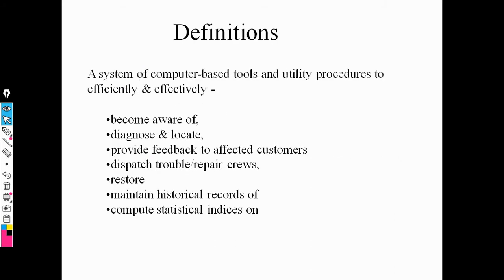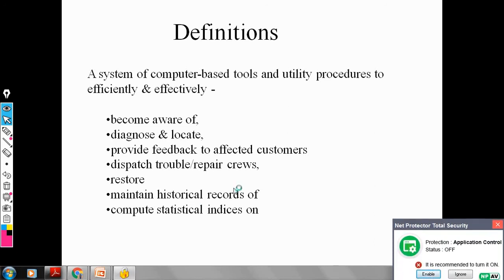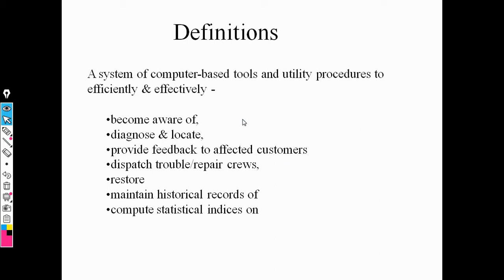What is the meaning of outage management system? An outage management system is a computer-based tool that works efficiently and effectively. It becomes aware of different problems, and these problems are easy to diagnose and locate. When the problem is resolved, it gives effective feedback to the customer, including residential areas.